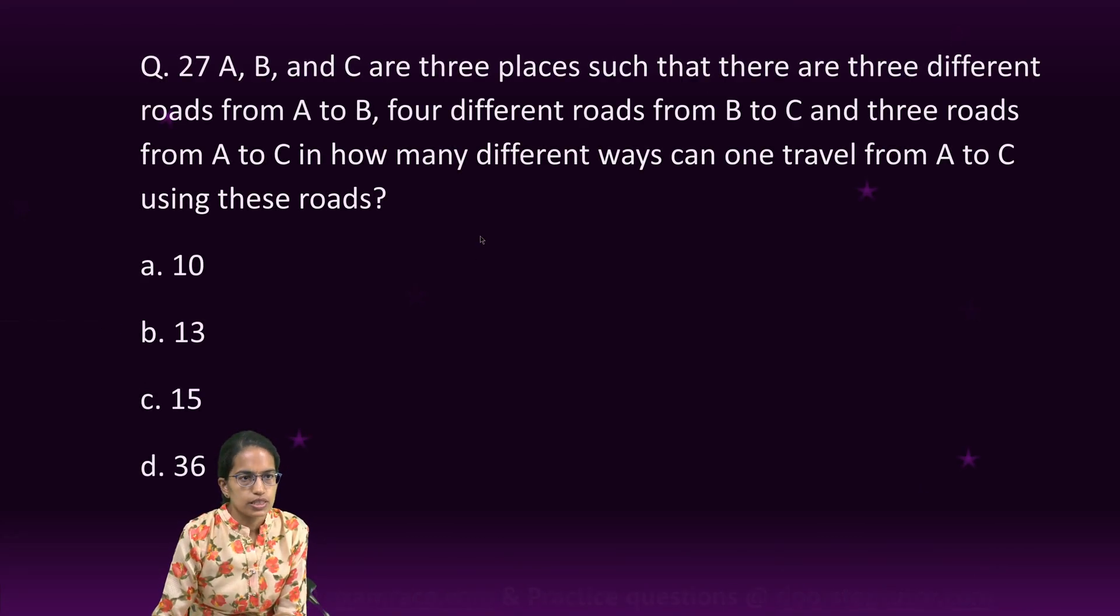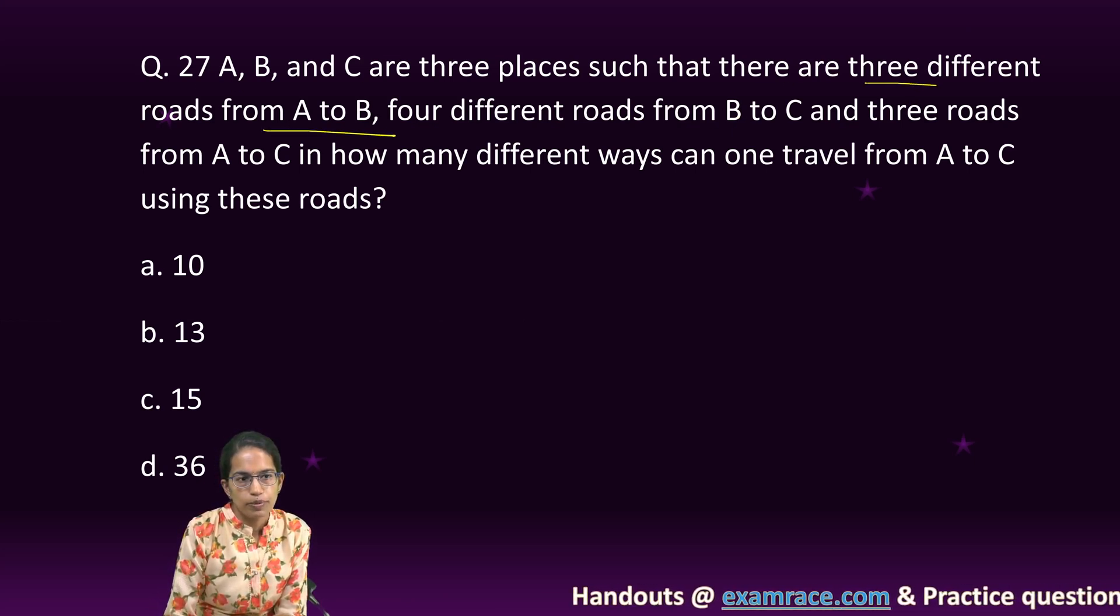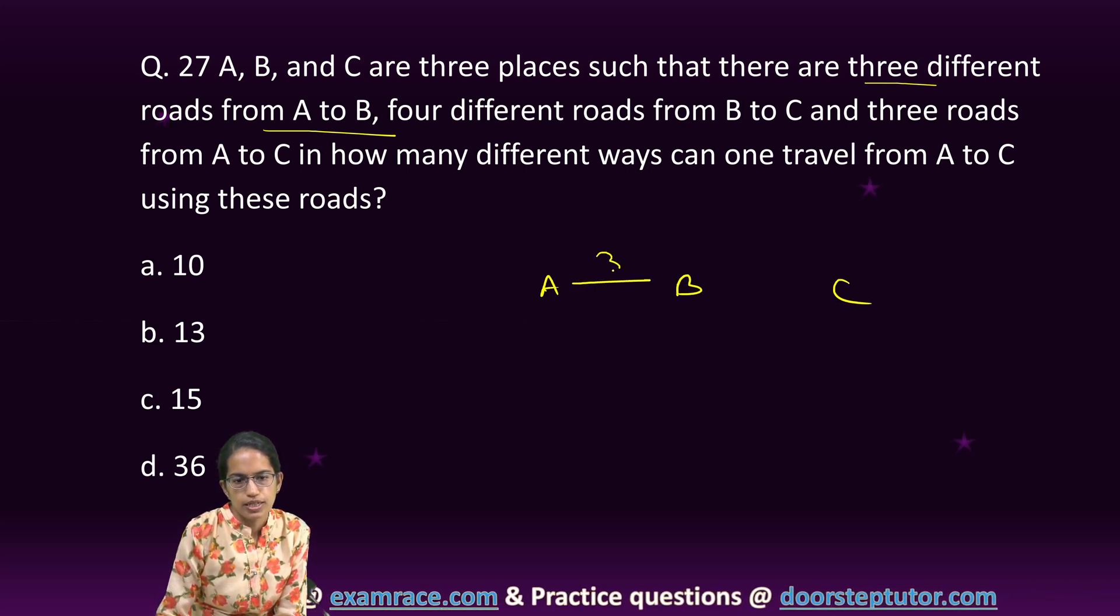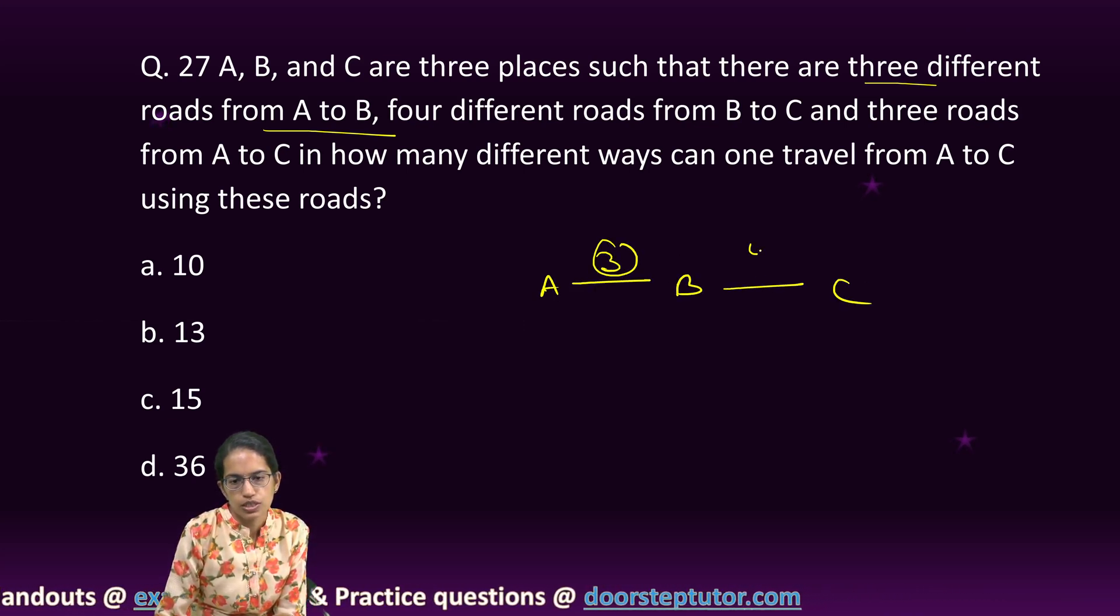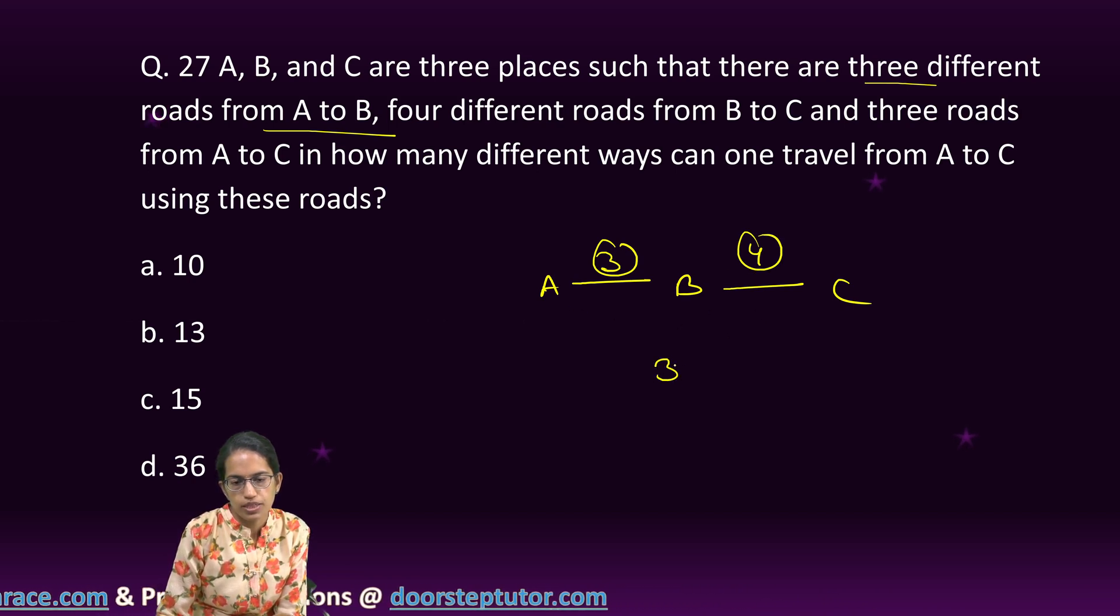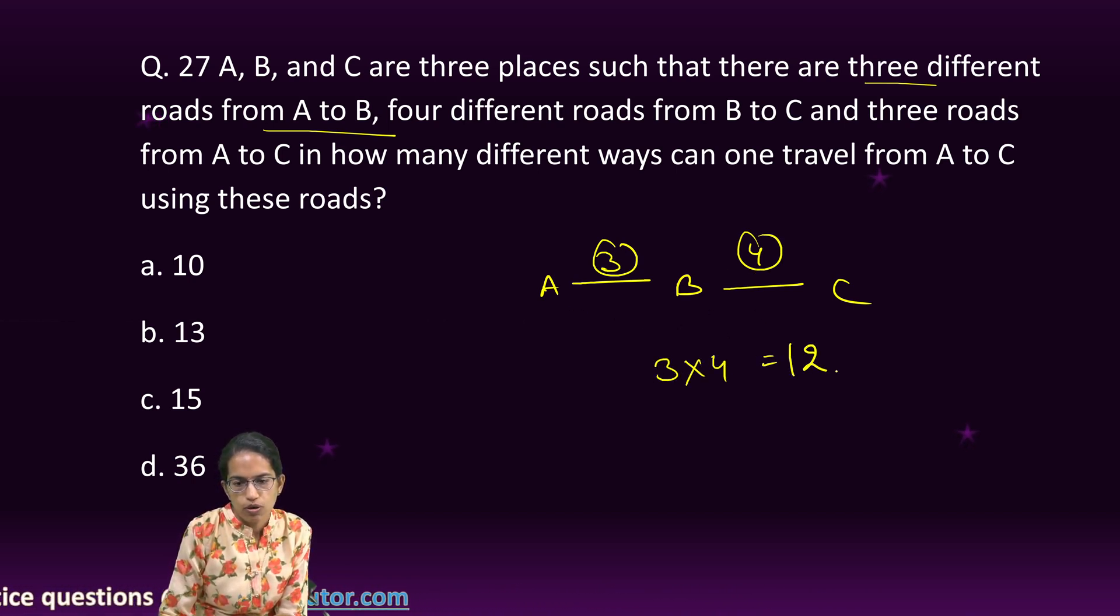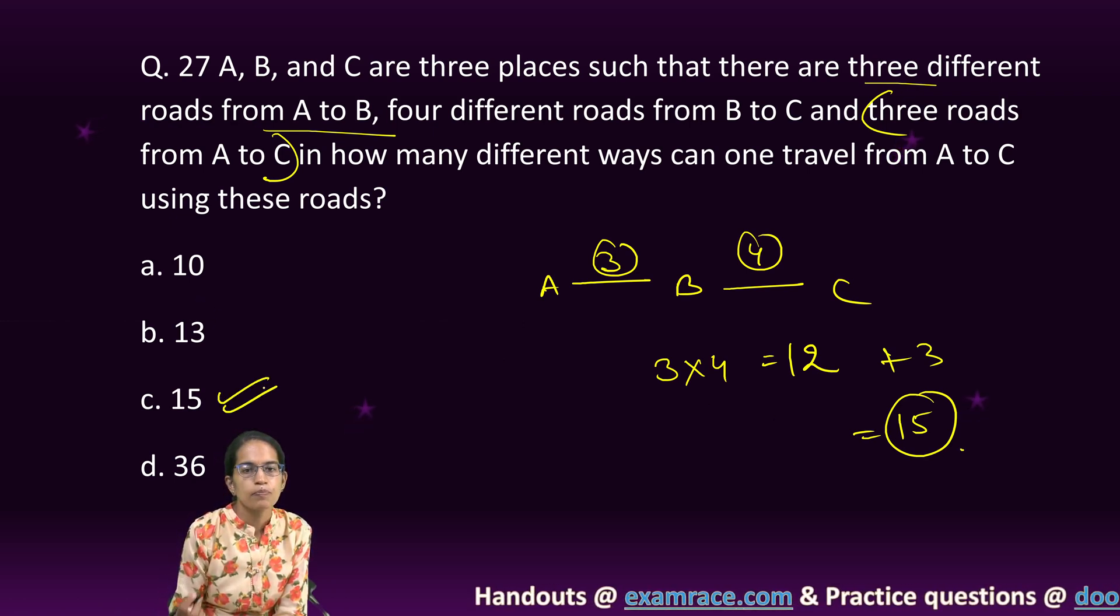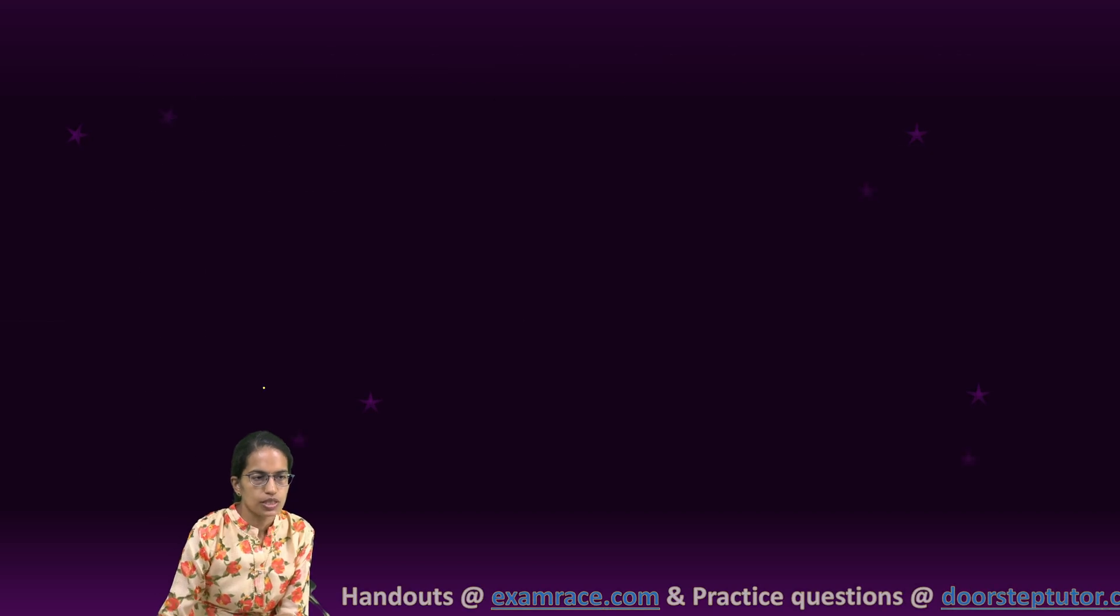The next question is, A, B and C are three places and there are three different roads from A to B. A to B, there are three different roads. B to C, there are four different roads. So, what are the combinations? Three into four. Twelve combinations. And then, there is three other roads from A to C. So, plus three. So, how many total ways in which a person can travel is 15, right? So, that's the option here.